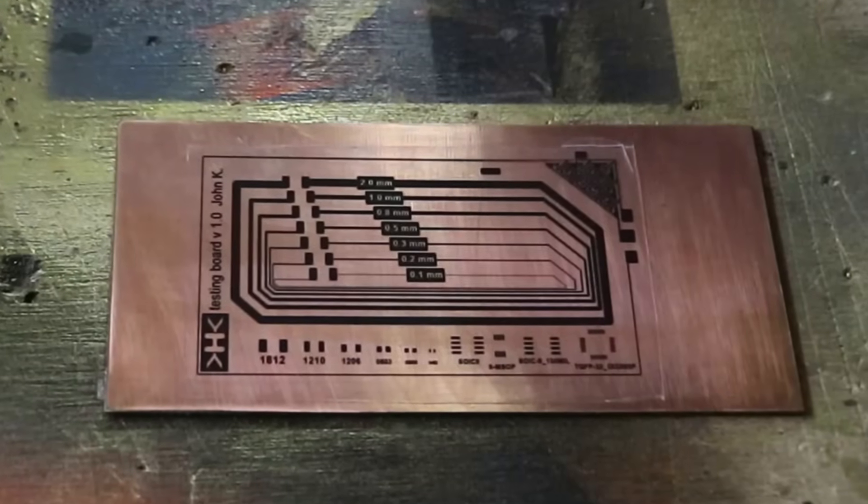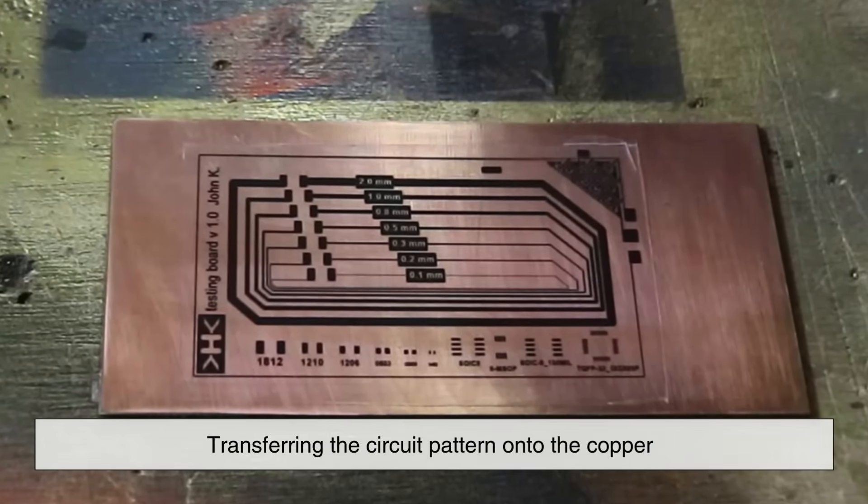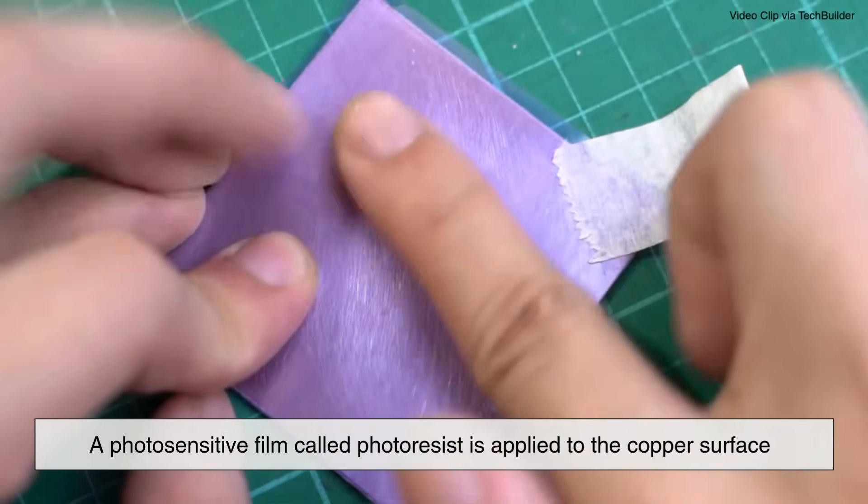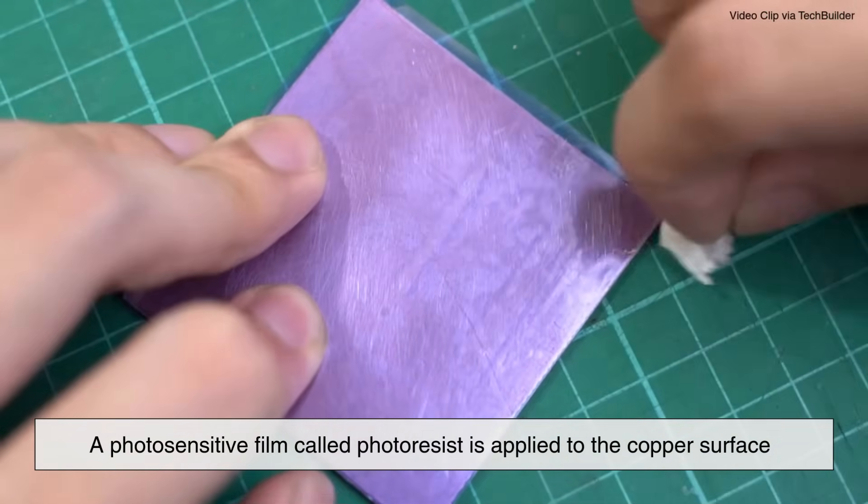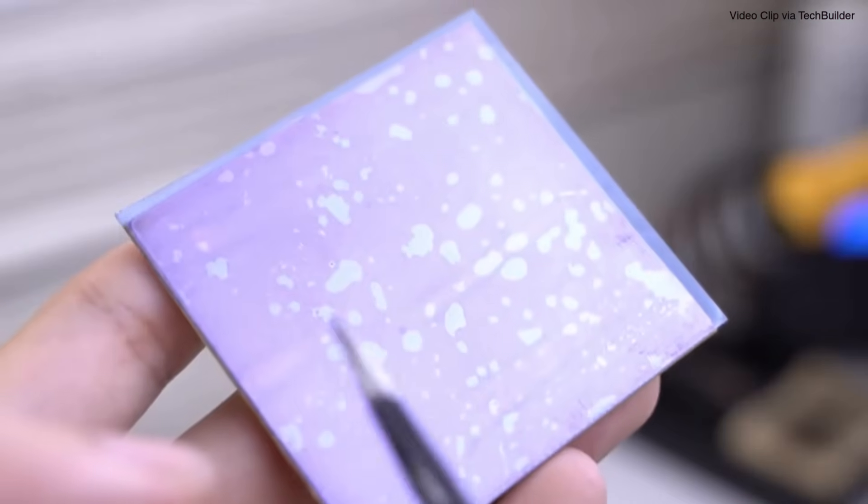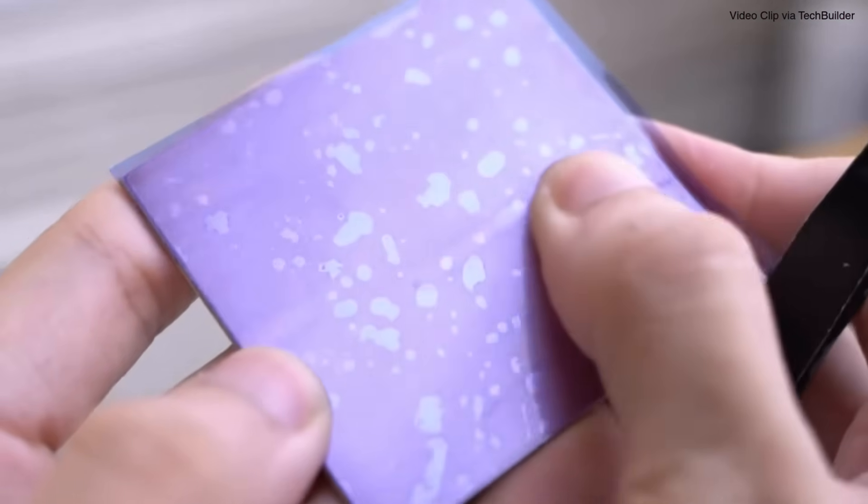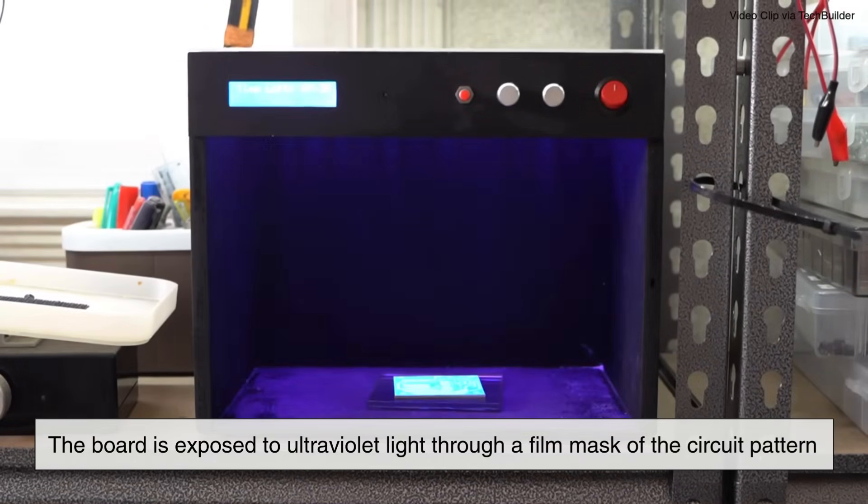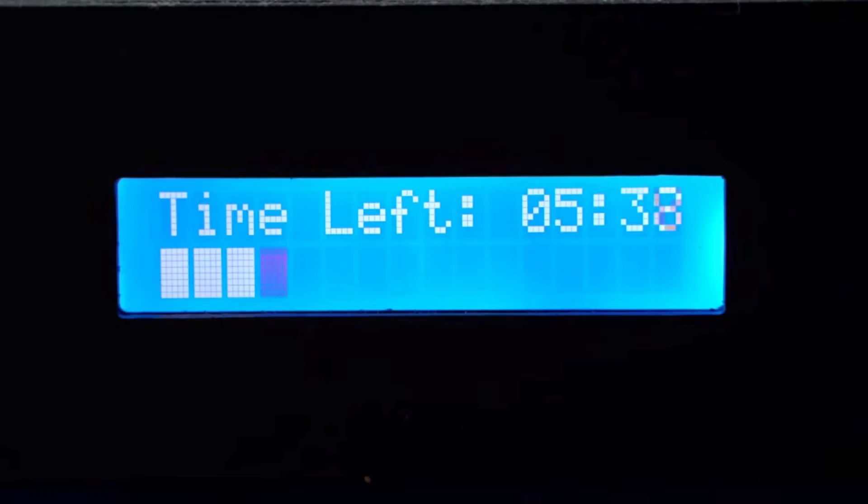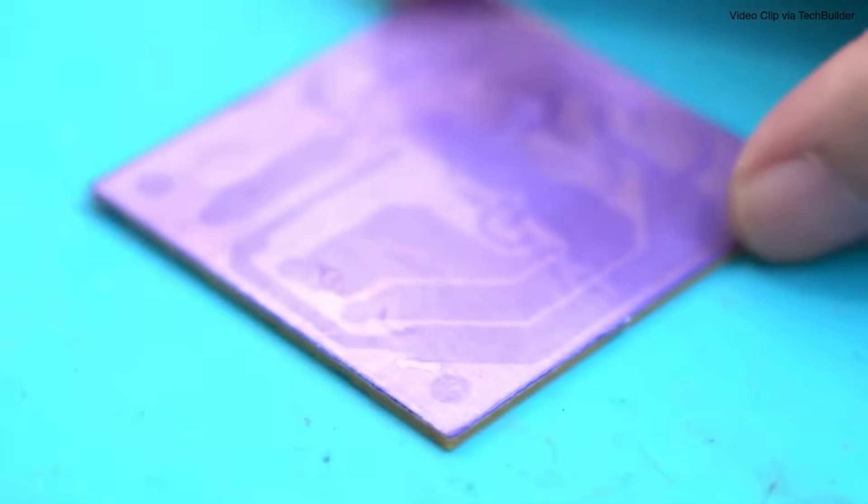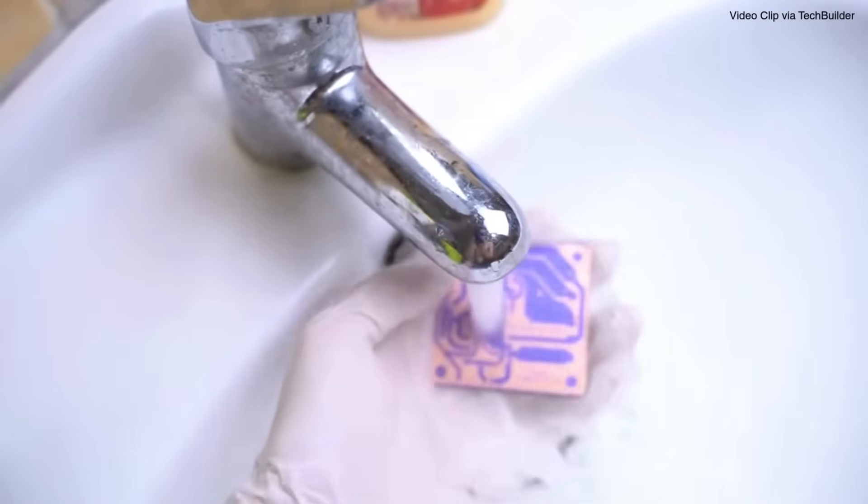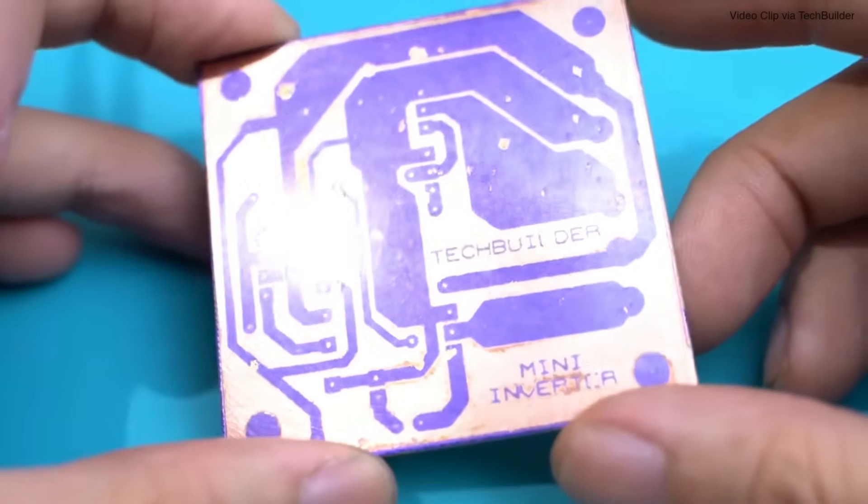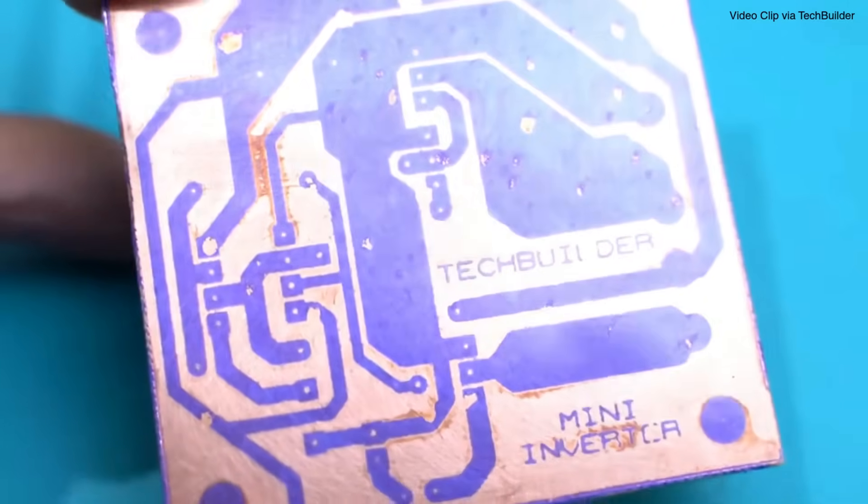Once the copper is laminated, the next step is transferring the circuit pattern onto the copper. First, a photosensitive film called photoresist is applied to the copper surface. Then, using a technique similar to photography, the board is exposed to ultraviolet light through a film mask of the circuit pattern. Where the UV light hits, it hardens the photoresist. The unhardened parts are then washed away with a developer solution, leaving behind the exact pattern of the circuitry.